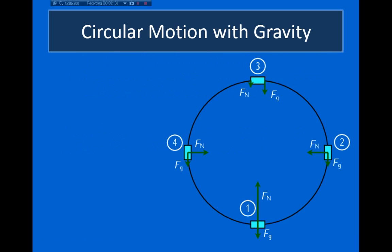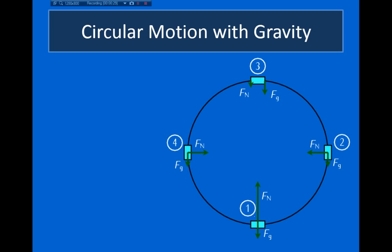In this slide here, I show four free body diagrams for an object as it travels through a vertical loop. And what I want to do is consider what the normal force has to be so that this object will travel through the circular path.